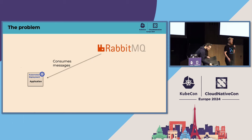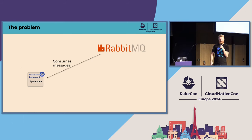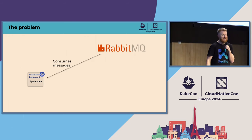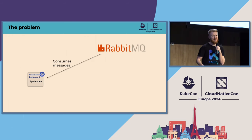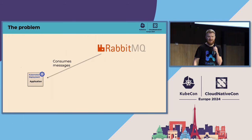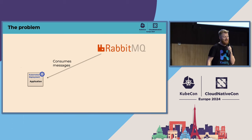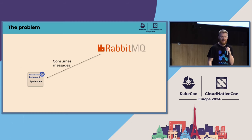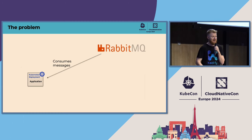So what is KEDA? What problem are we trying to solve? Imagine you have an application doing some important tasks — consuming data from an external source, in this case RabbitMQ. Because the data flow is not constant, sometimes you need to process more data, sometimes less, and sometimes there's no data at all.